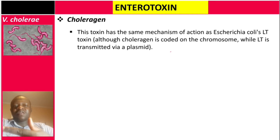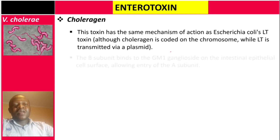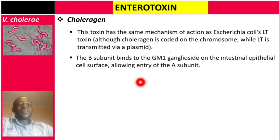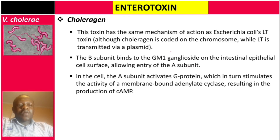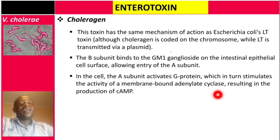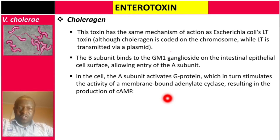Choleragen has two subunits: the A subunit and the B subunit. A is for action, B is for binding. The B subunit binds to the GM1 ganglioside on the intestinal epithelial cell surface, allowing entry of the A subunit. Inside the cell, the A subunit activates the G protein, which in turn stimulates the activity of membrane-bound adenylate cyclase, resulting in the production of cyclic AMP.